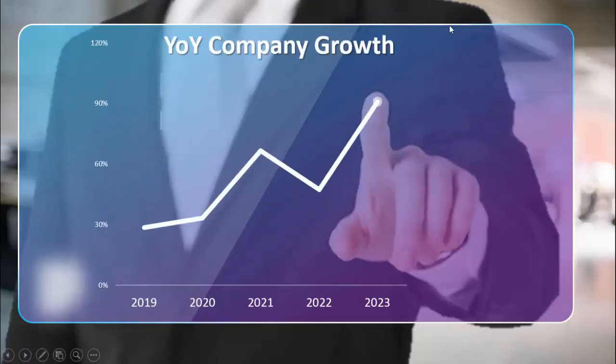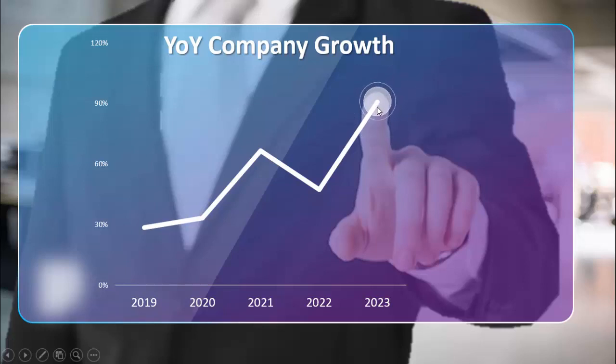In today's tutorial I am going to show you how to create this slide in PowerPoint. I have added one background image of an office, then a colorful screen, and when I click, a person comes in who is pointing his finger towards the screen. I have added a chart showing the company's year-on-year growth, highlighting the point of highest growth. You can change the chart or add an image depending on your requirement.